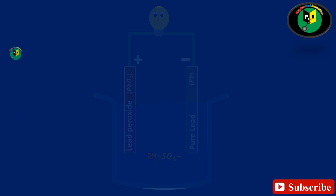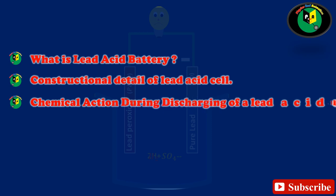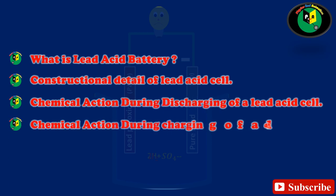1. What is lead acid battery? 2. Constructional detail of lead acid cell. 3. Chemical action during discharging of a lead acid cell. 4. Chemical action during charging of a lead acid cell.